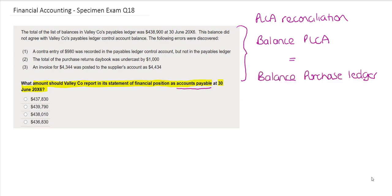The question tells us that the total of the list of balances in Valley's payables ledger was $438,900 at the 30th of June 20x6. This did not agree with Valley's payables ledger control account balance and the following errors were discovered.